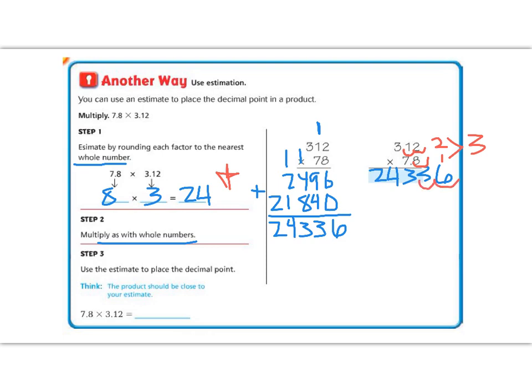So I'm going to start here and I'm going to go 1, 2, 3, so my number is 24.336. And I know that that's a reasonable number because it's close to my estimate. So 7.8 times 3.12 is 24.336.